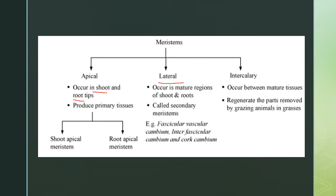The third type is the intercalary meristem, which occurs between mature tissues. These only occur in monocots such as grasses, and they allow plants to regenerate after animals graze on them or after we mow the grass.